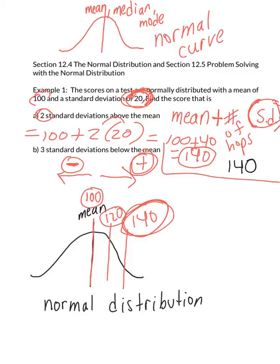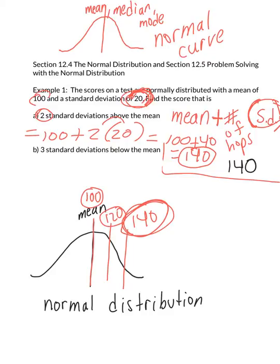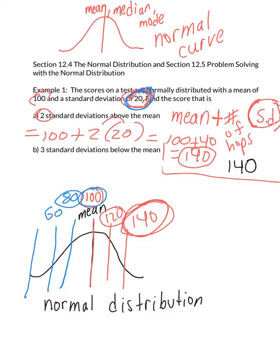Part B says to find three standard deviations below the mean. Below means moving to the left, and when moving to the left I subtract instead of add. One hop to the left: 100 minus 20 gives me 80. Two hops to the left: 80 minus 20 gives me 60. Three hops to the left: 60 minus 20 gives me 40. So three hops below the mean lands you at 40. That's the picture method.